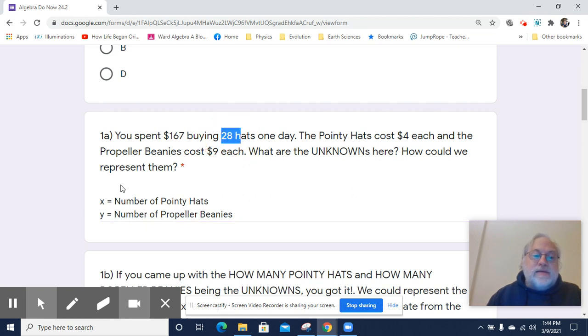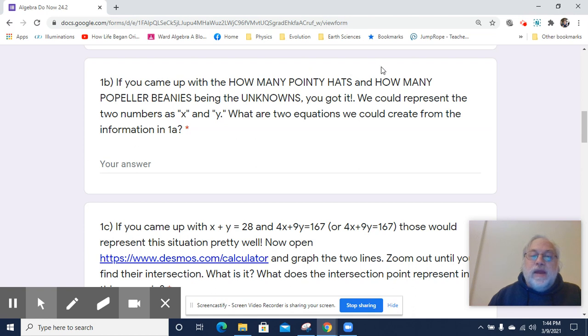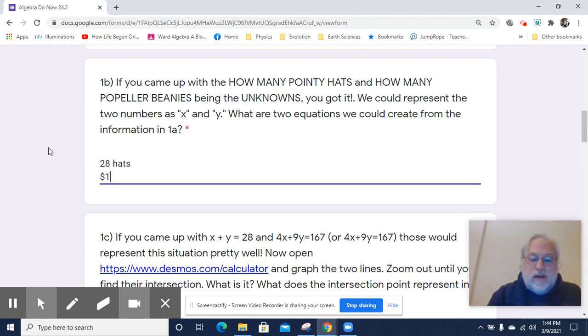We know you got 28 hats. Some of them were pointy hats, and some of them are propeller beanies. And you spent $167, pointy hats were $4, and propeller beanies were $9. So in fact, if that's what you came up with, pointy hats and propeller beanies being the unknowns, you're good to go. Now what are the two equations we've got? Well, we've got a couple of totals. We've got 28 hats, and we've got $167 that was spent. The 28 hats comes from the X pointy hats plus Y propeller beanies. So there's our first equation.